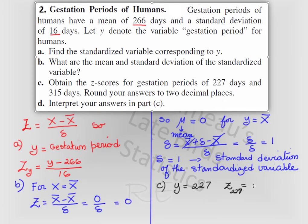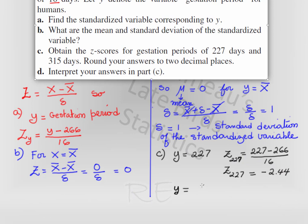A z-score of 227 will be 227 minus 266 divided by 16. So the z of 227 will be approximately negative 2.44. The z-score for 315 will be 315 minus 266 divided by 16. So z of 315 will be approximately 3.06.